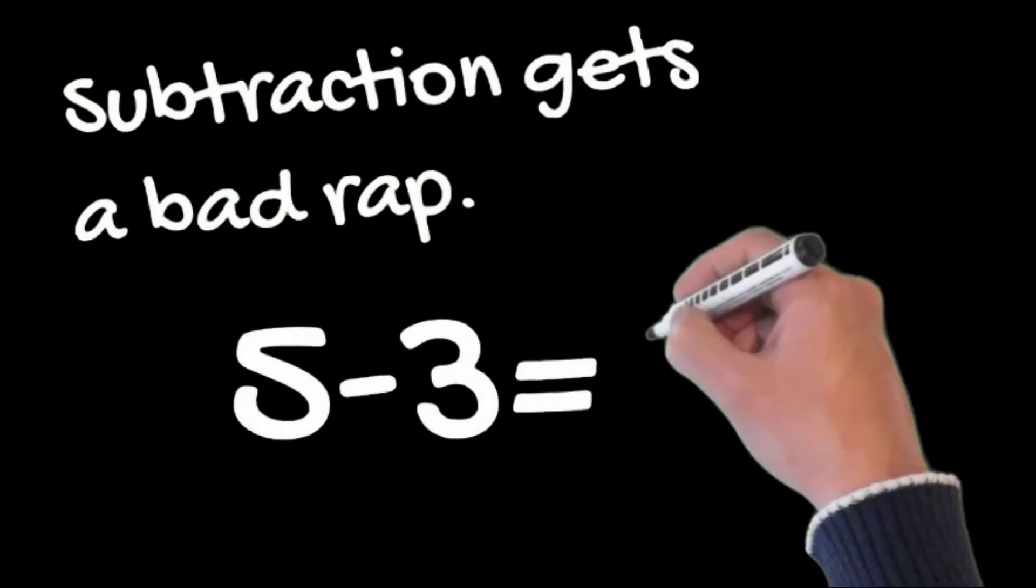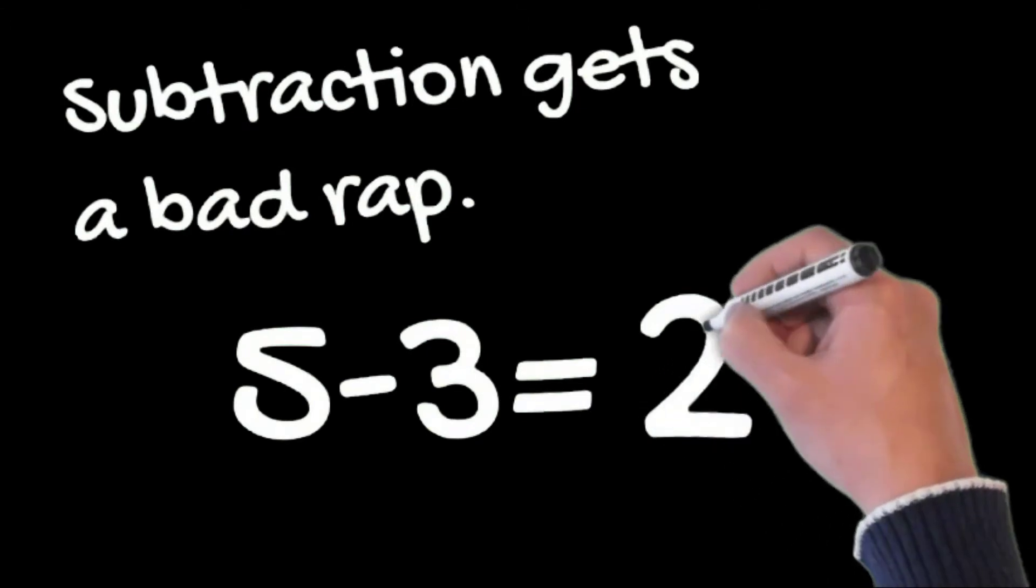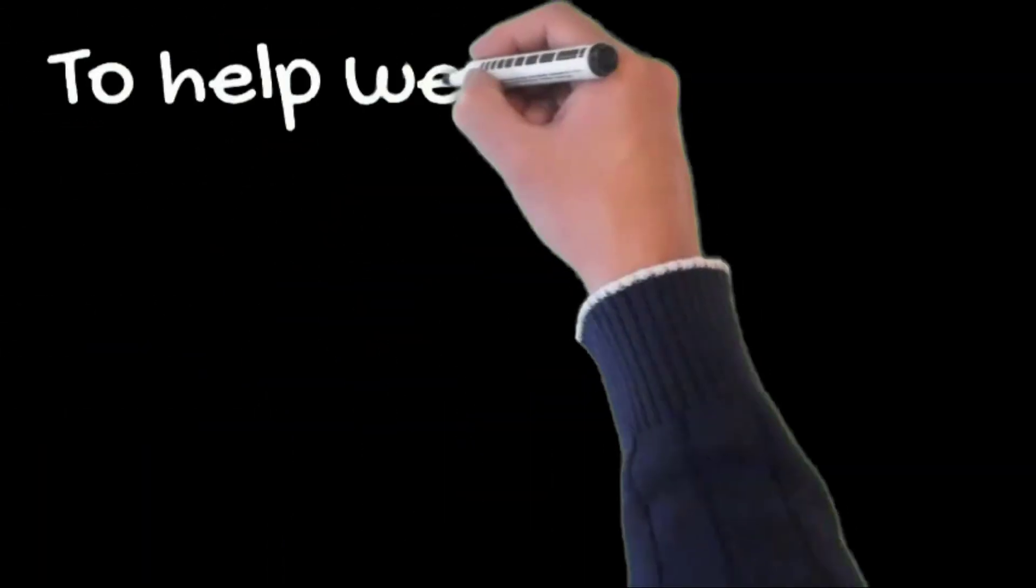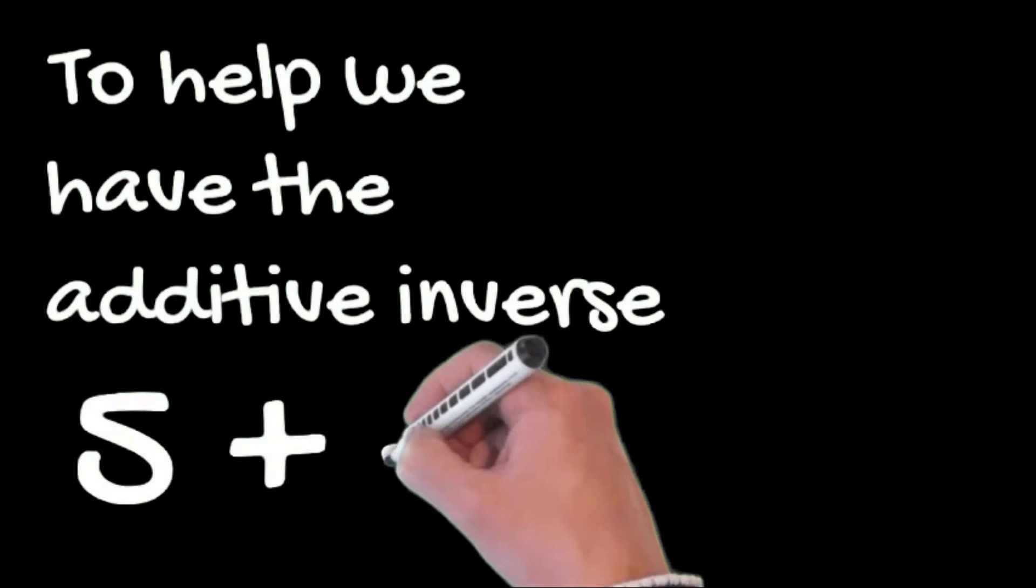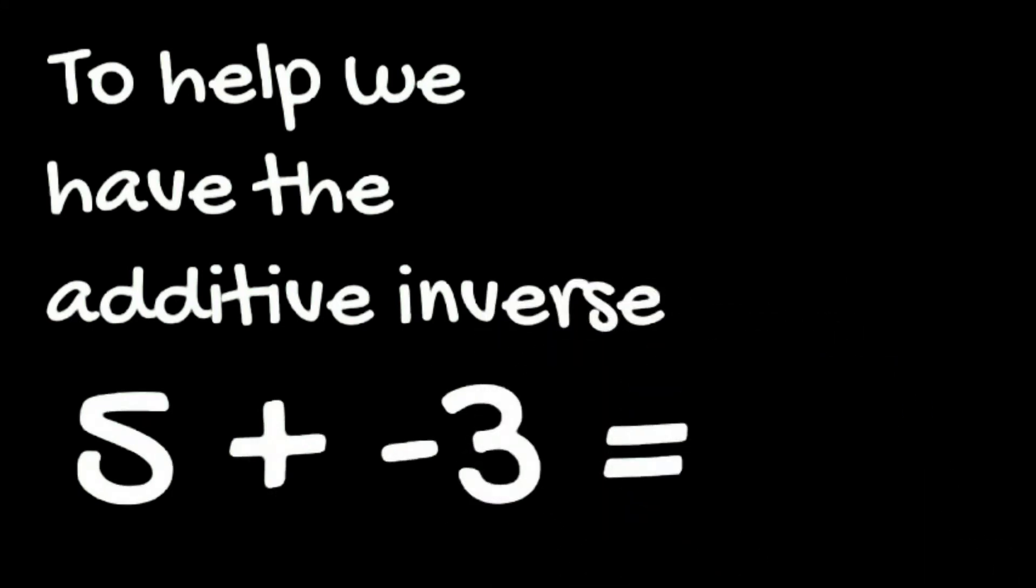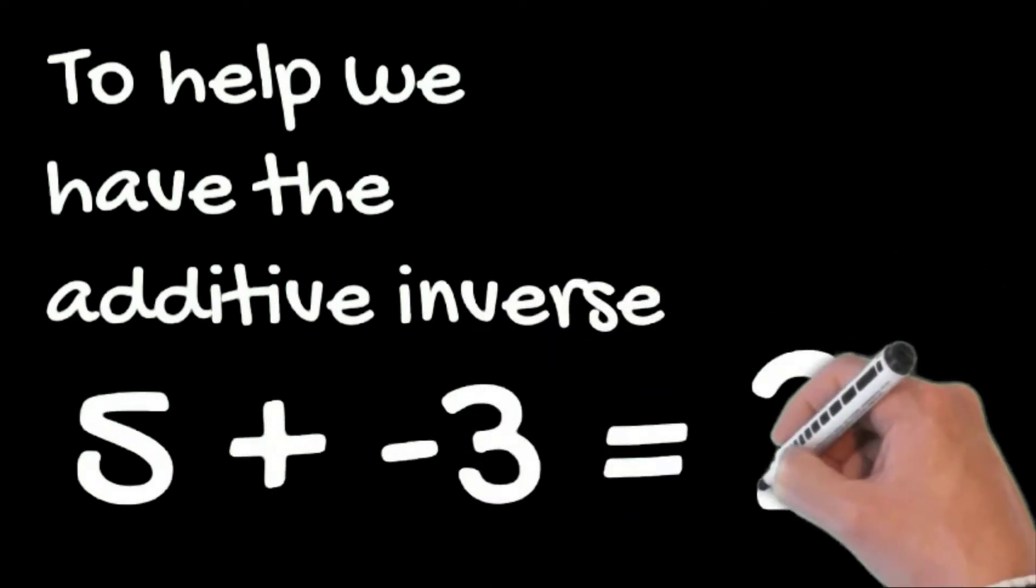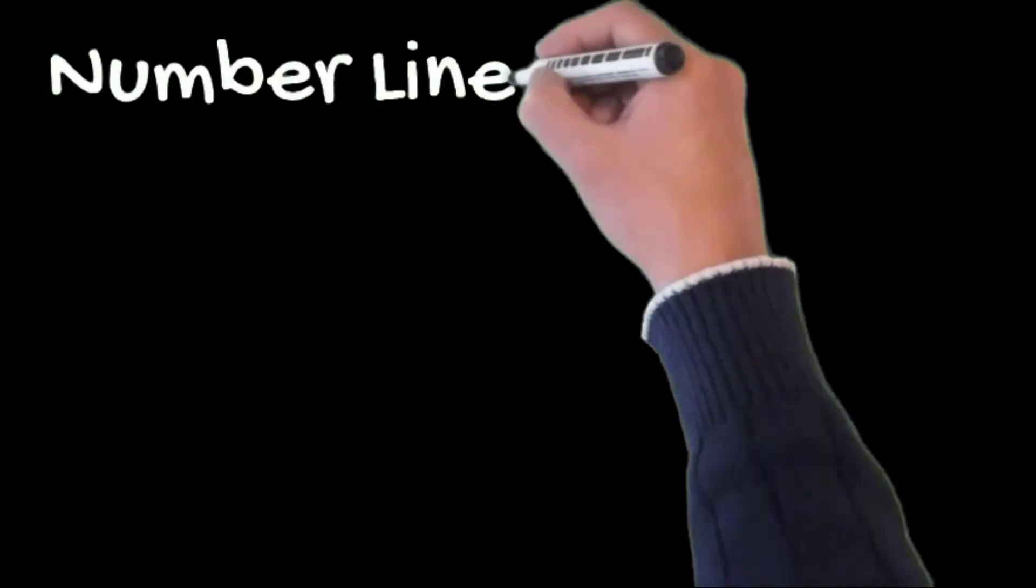Or whatever you're trying to solve. So here is where we use the additive inverse. Instead of 5 minus 3, we do 5 plus a negative 3 and the result is still 2.